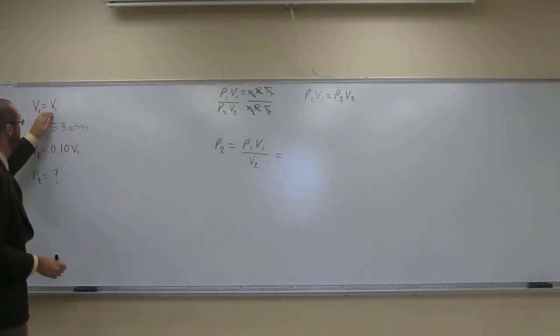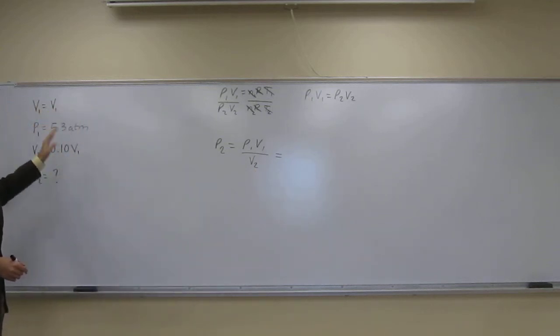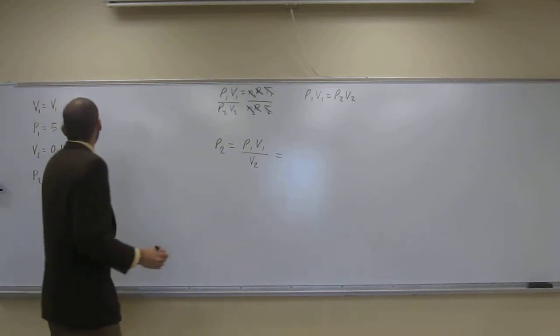So, what you'll notice is that we have V1 on top of V2 here. Right? And we have V1 and V1 in both of these. So, that's going to cancel out. That's what's going to happen.